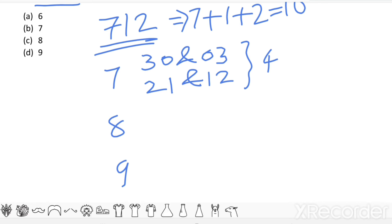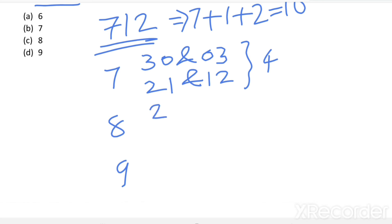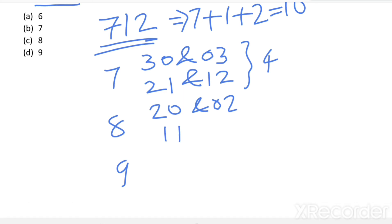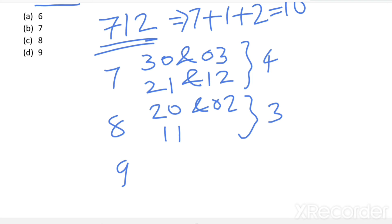For hundreds digit 8: combinations are (8, 2, 0), (8, 0, 2), and (8, 1, 1) — giving a total of 3 numbers with hundreds digit 8. Then, 9 is also a possible hundreds digit.